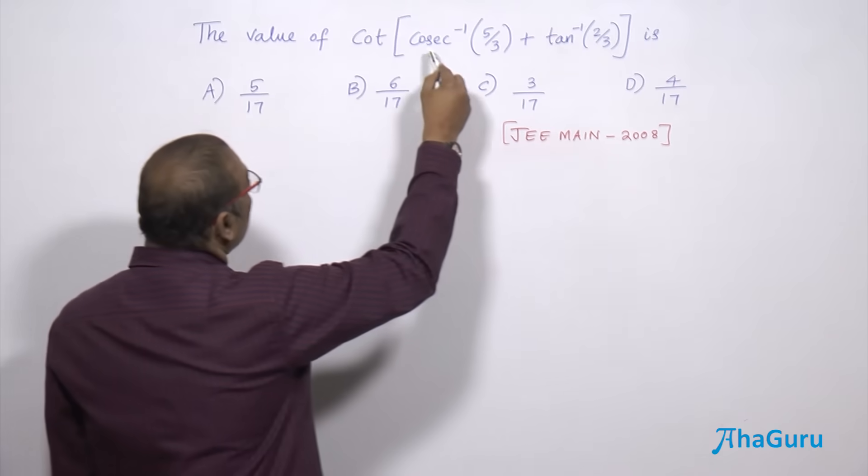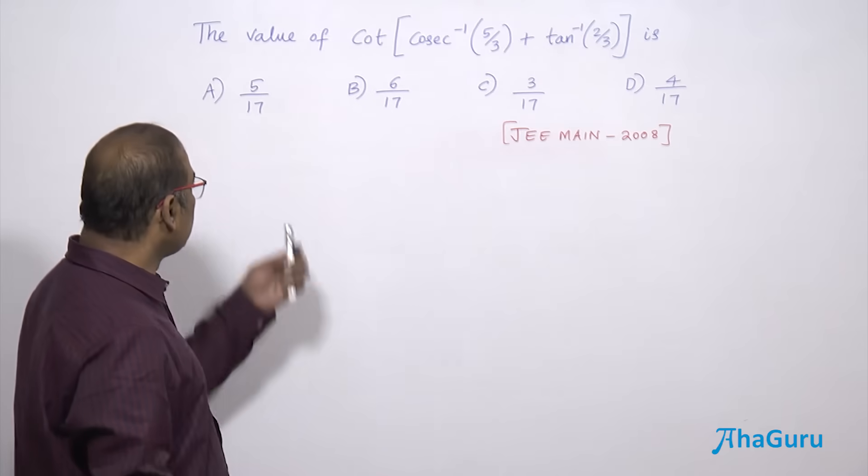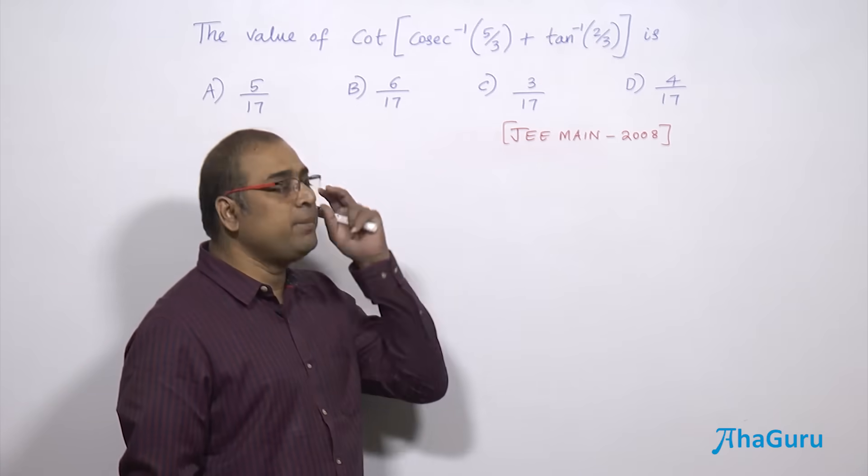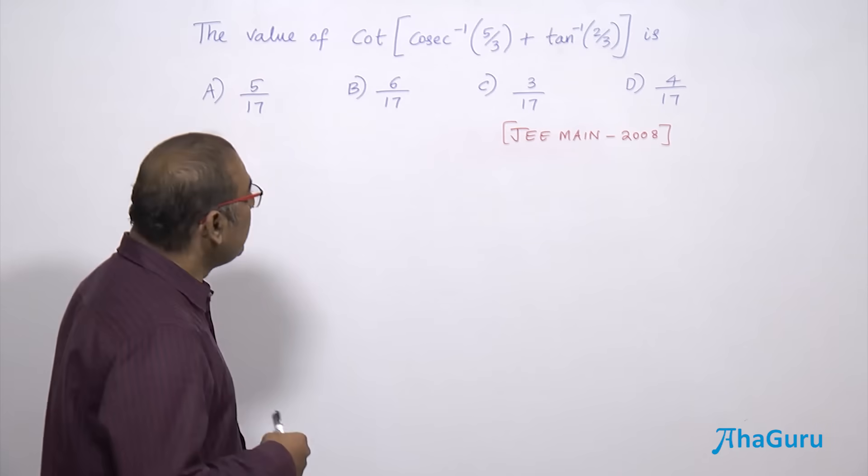The value of cot of cosecant inverse of 5 by 3 plus tan inverse of 2 by 3 is asked in JEE Main 2008. The options are 5 by 17, 6 by 17, 3 by 17, and 4 by 17.